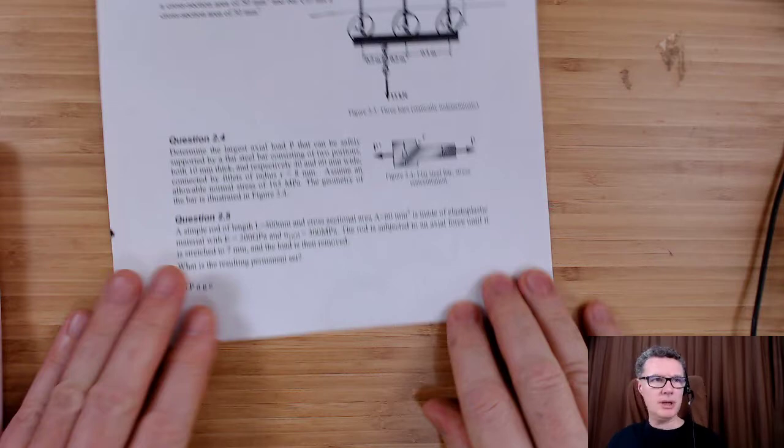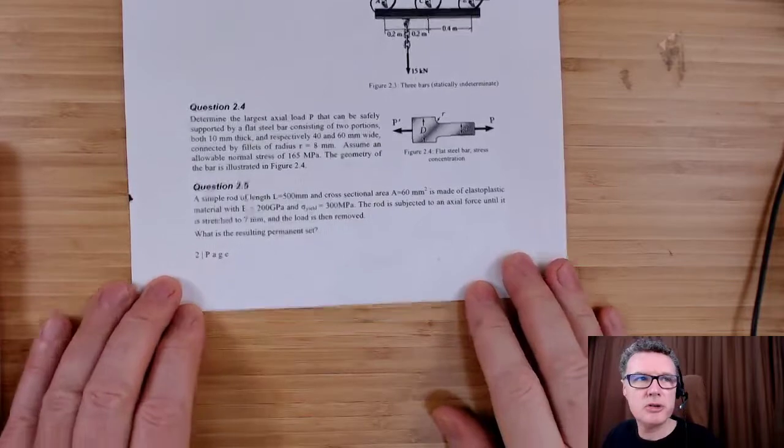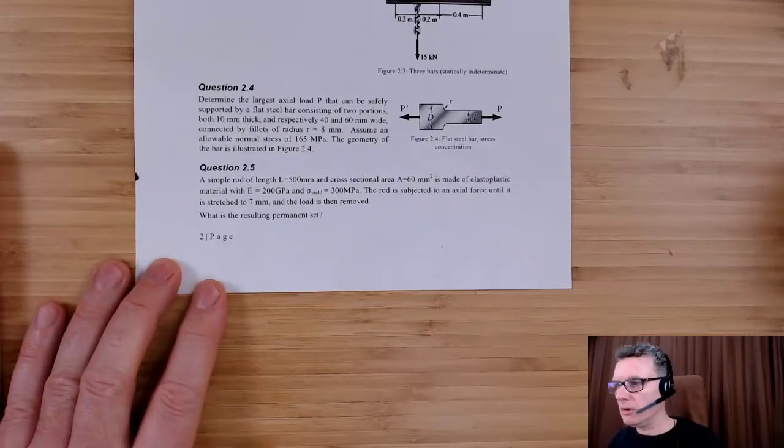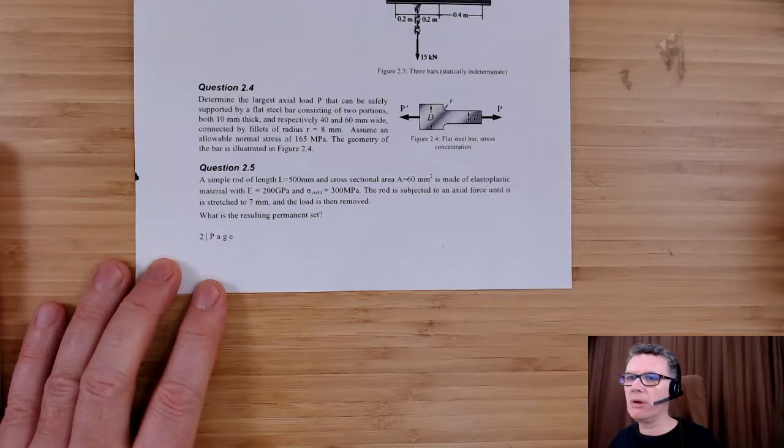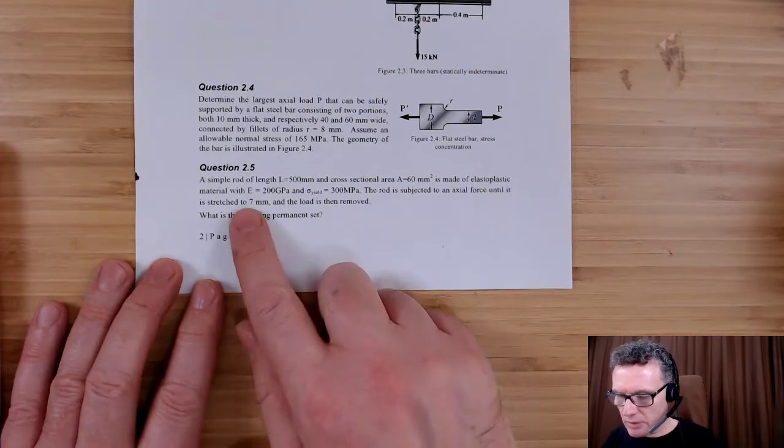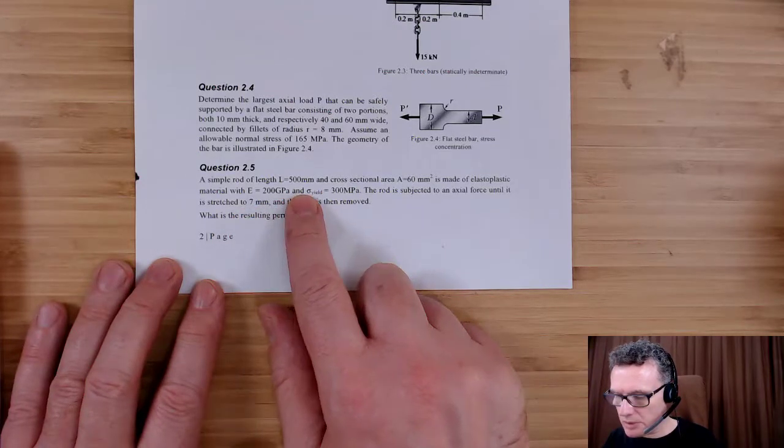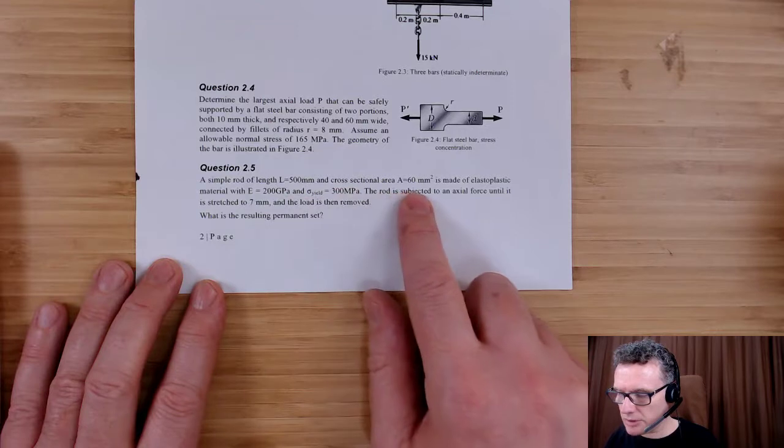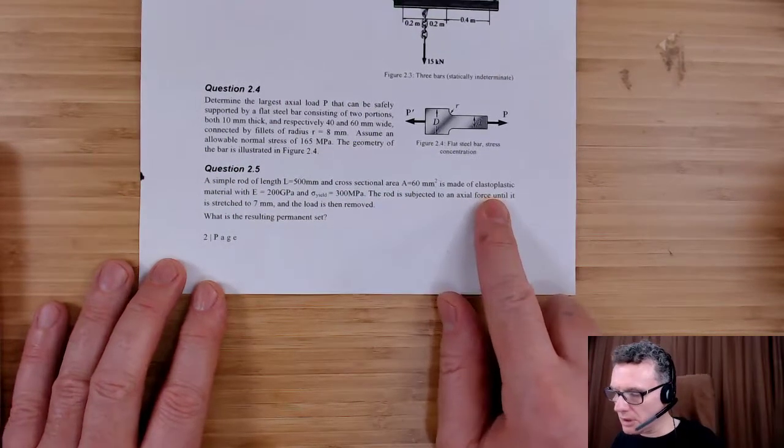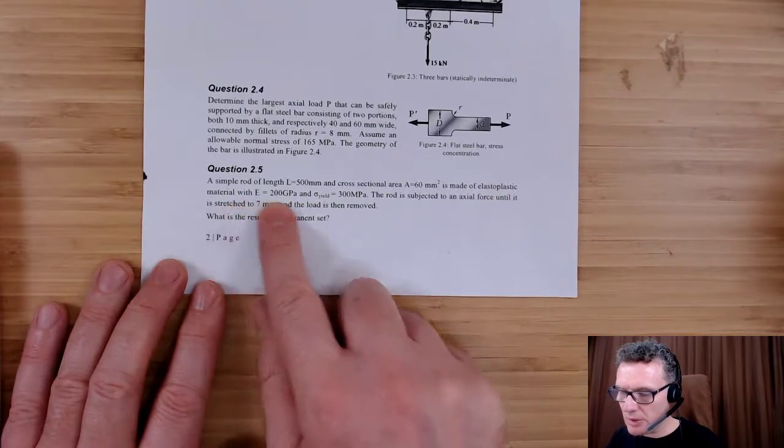Okay, let's do question 2.5. We've got a rod which is length 500 millimeters, cross-section area 60 millimeters squared. It's made of elastoplastic material that could be like mild steel; it's not actually a plastic.